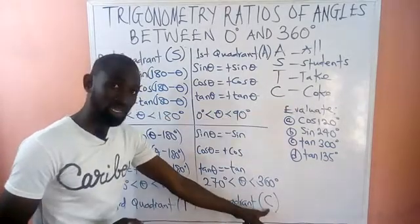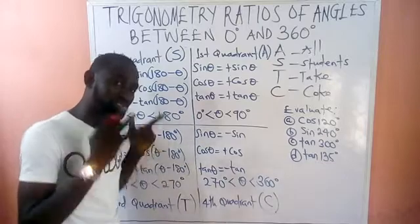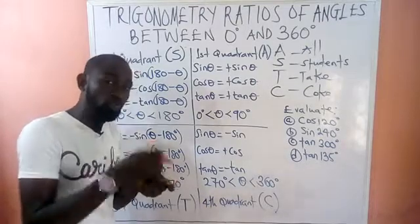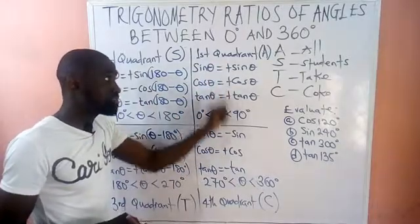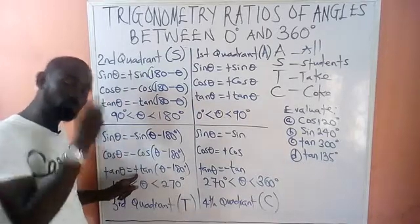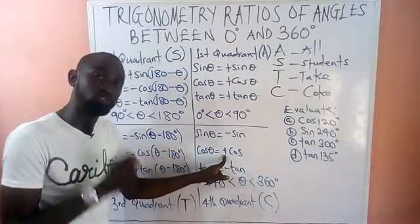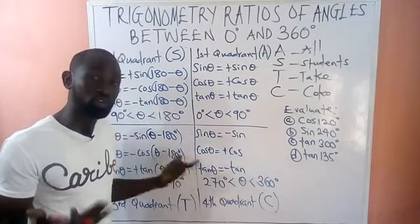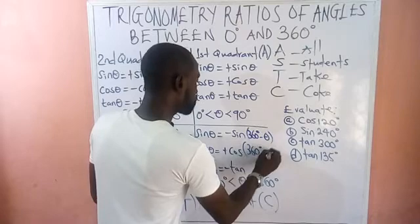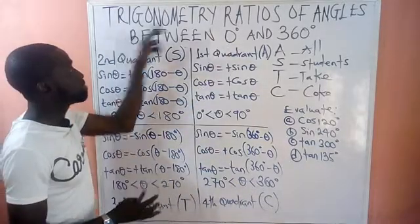C stands for the fourth quadrant, meaning only cosine must be positive in the fourth quadrant. So in each quadrant: all ratios are positive in the first, only sine is positive in the second, only tangent is positive in the third, and only cosine is positive in the fourth quadrant. The formula used in the fourth quadrant is 360° minus θ. This is the format used to find the trigonometry ratios of angles between zero degrees and 360 degrees.